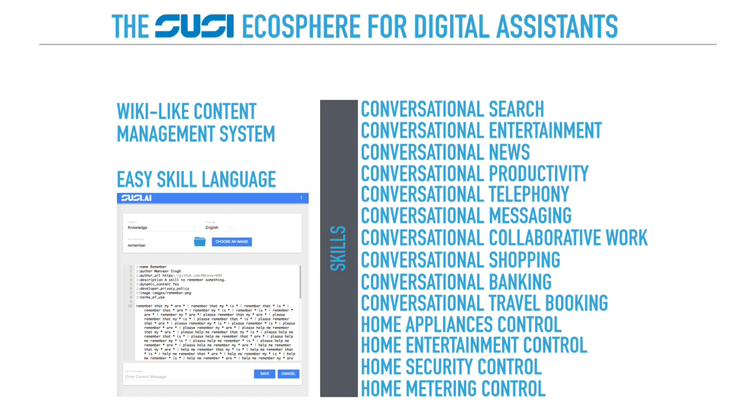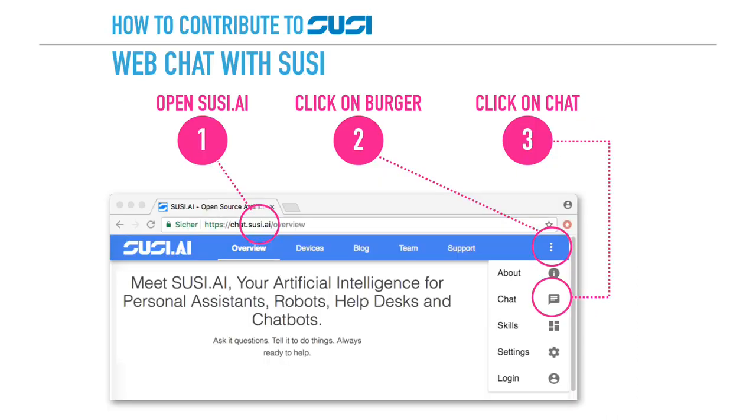So in this ecosystem we need all these different skills to do entertainment, productivity, telephony, messaging. We also want to do shopping and banking through that interface. And for all of that we need all these skills. The skills are done in the skill creation content management system that we have at SUSI.ai.